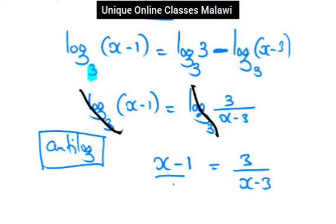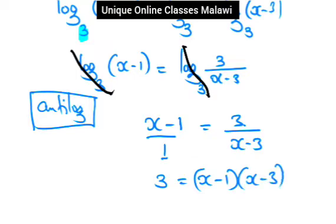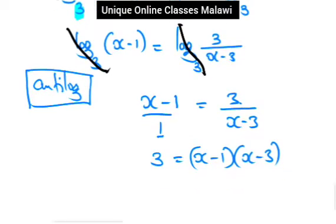We remove the logs — unlog both sides — so x minus 1 is equal to 3 over (x minus 3). Next step is cross multiplication: 1 times 3 equals (x minus 1)(x minus 3), which expands to x squared minus 4x plus 3.